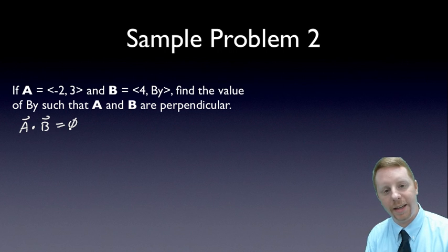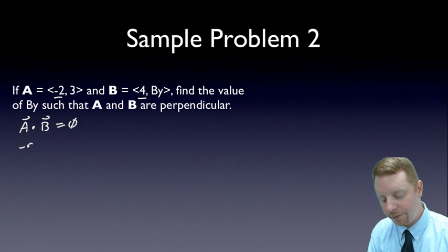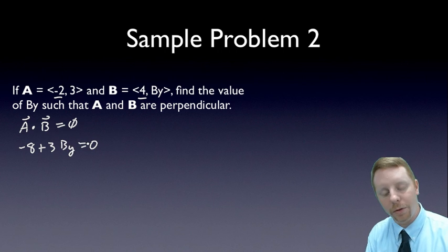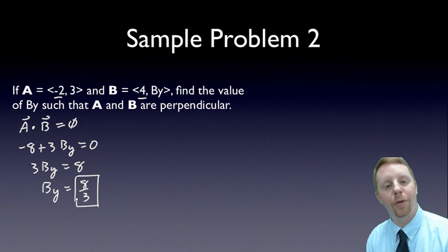To find the dot product of A and B, we multiply their x components, -2 times 4 is -8, plus the product of their y components, 3 times By, equals zero. With a little mathematical rearrangement, 3By equals 8, or By must equal 8/3 if they are perpendicular.